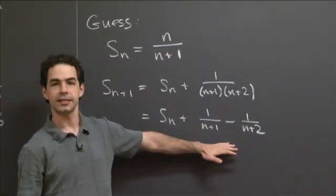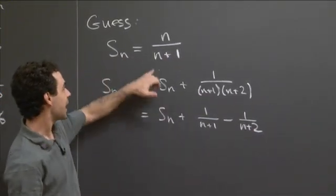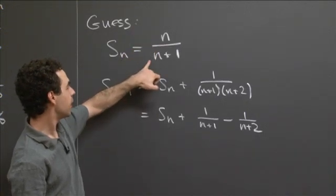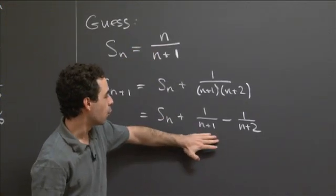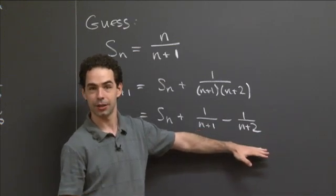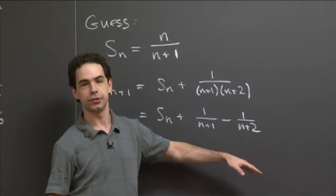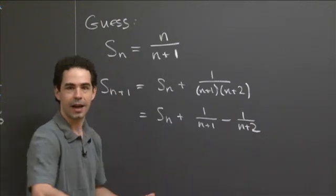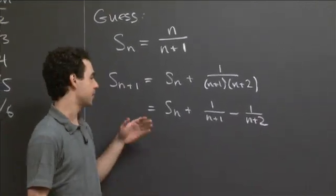And from here, it's easy to see that, if Sn is equal to n over n plus 1, then this will be equal to 1 minus 1 over n plus 2, which is n plus 1 over n plus 2. And so using the process known as mathematical induction, you have that it follows for all values of n.